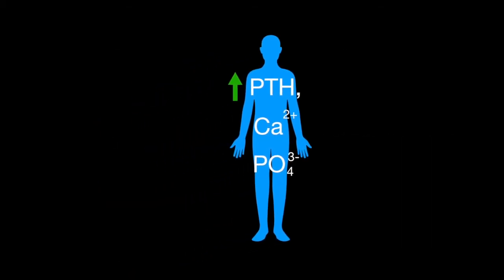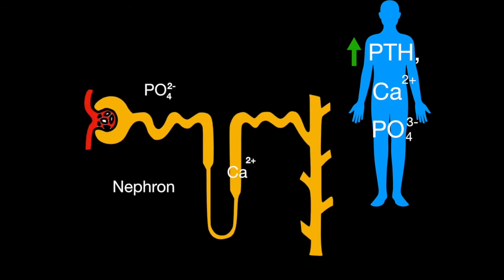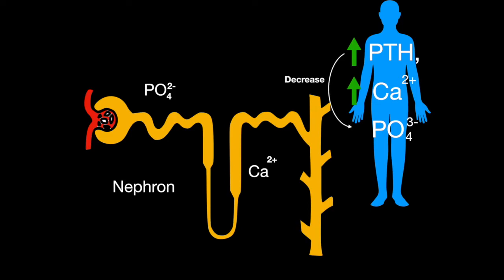An important thing to remember is that parathyroid hormone increases calcium levels by increasing calcium resorption in the kidney. However, it simultaneously works to decrease phosphate reabsorption in the kidneys as well.